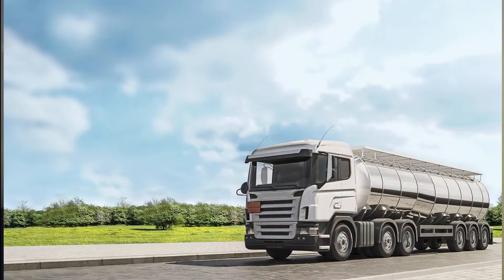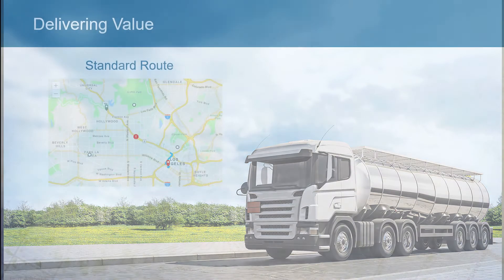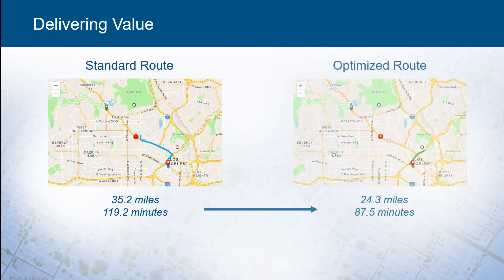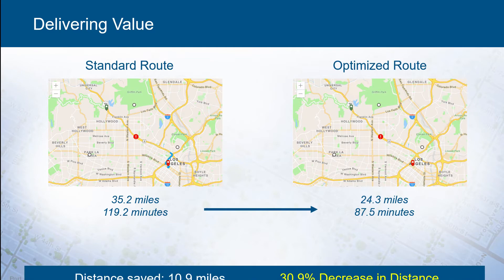Other workflows that people are really interested in beyond mobility are field logistics — how people in the field move around, whether that be workers, trucking terminals, or other modes of transportation with a logistics component. We can now support those workflows in Enterprise GIS as well.